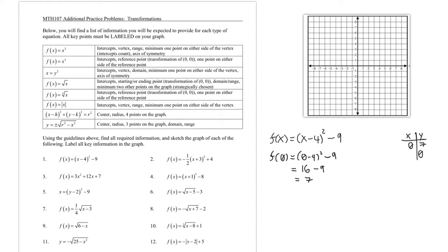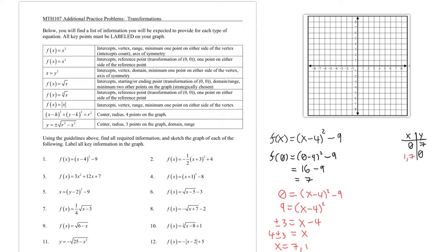Then we find what x equals when y is 0 by setting the entire function equal to 0 and solving for x. We'll get two answers. Adding 9 to both sides, then taking the square root of both sides — being careful with the plus-minus — then adding 4 gives us x = 4 ± 3, so x = 7 and x = 1. There are two x-intercepts: x = 1 and x = 7.